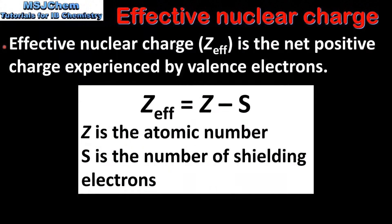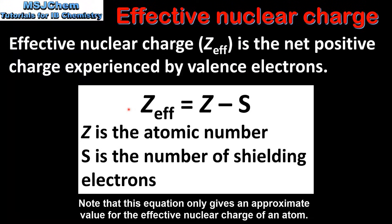Next we look at effective nuclear charge. Effective nuclear charge is the net positive charge experienced by valence electrons. Here we have an equation which can be used to calculate it: effective nuclear charge equals the atomic number — the number of protons in the nucleus — minus the number of shielding electrons in the atom.